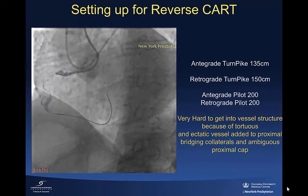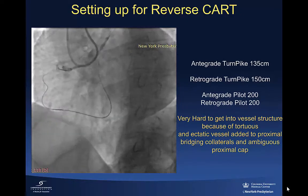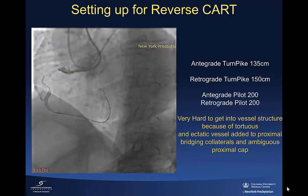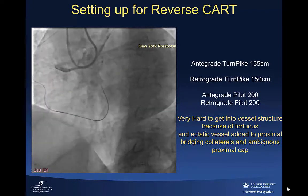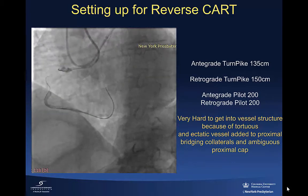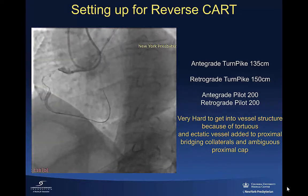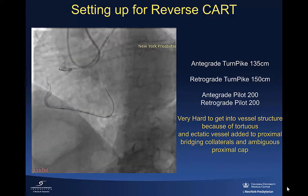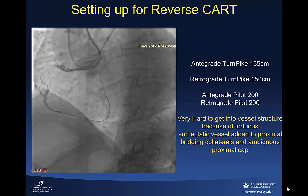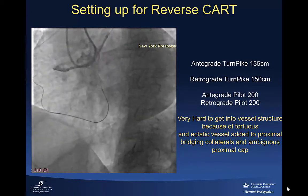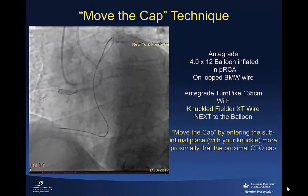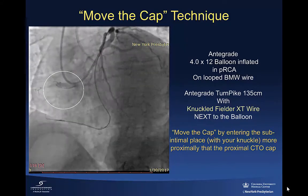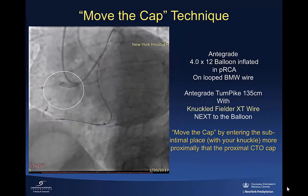Then it was very easy to advance the microcatheter close to the distal cap, but despite my efforts, I was not able to create a dissection, and I was not happy with where the wires were going. My stiff wires — my Confianzas and my Gaia 3s — were going into places that I was not happy with. So I had to make a decision at this point either to abort the case or figure out an alternative approach. What I decided to do is convert from retrograde to antegrade, and given the ambiguous proximal cap, I utilized what we call the move the cap technique. This is a very safe way — I think it's the safest way to clear proximal cap ambiguity.